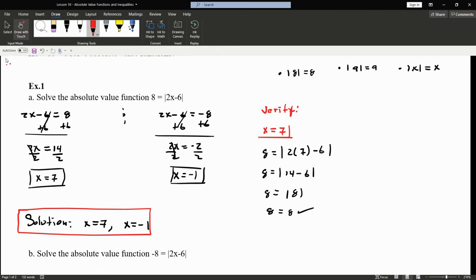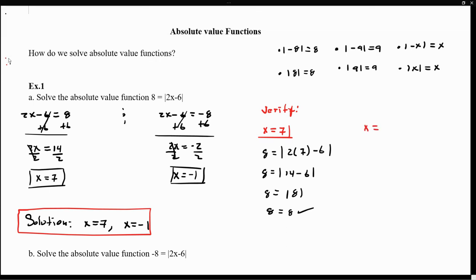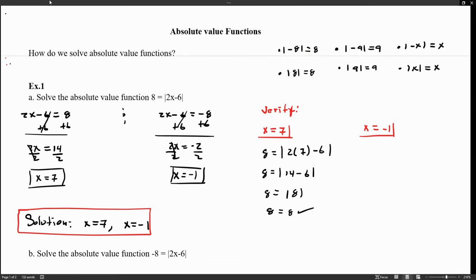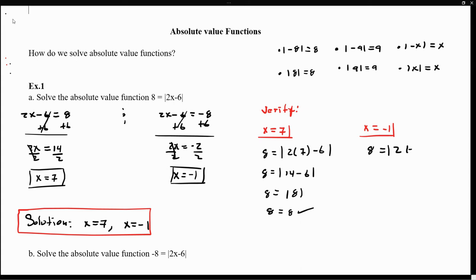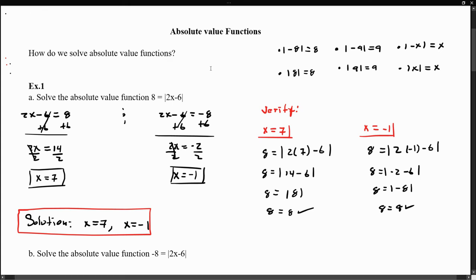Now let's check x equals negative 1. Substituting into the original: 8 equals the absolute value of 2 times negative 1 minus 6. That gives negative 2 minus 6, which is the absolute value of negative 8. The absolute value of negative 8 is 8, so 8 equals 8. Both x equals 7 and x equals negative 1 are solutions of this absolute value function.